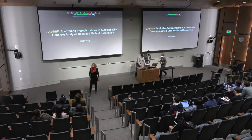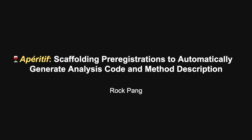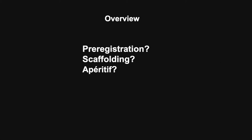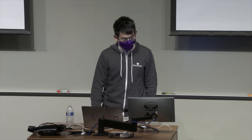My name is Rock. Today I'm presenting my ongoing work: Aperitif — scaffolding pre-registration to automatically generate analysis code and method descriptions. My talk is divided into three sections. First, I'll introduce what pre-registration is and why we use it. Second, why we're doing scaffolding. Third, I'll walk you through how to use Aperitif and the design principles that guided it. Pre-registration is a practice of documenting a study's objective and analysis plan before observing its outcome — you can think of it as a timestamped form you fill out before data collection. As predicted and the Open Science Framework are two popular mainstream pre-registration templates: open-ended forms that ask researchers to include hypothesis, variables, analysis plan, and how to collect samples.